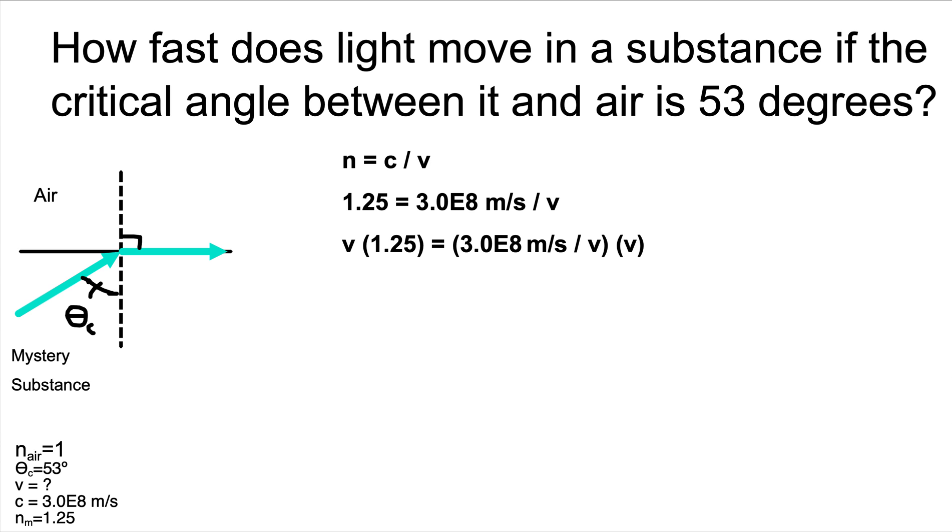We want to solve for velocity, and it is on the bottom of the equation, so we will have to multiply both sides by velocity. When we do that, it will cancel out on the right-hand side. Then we will be left with velocity times 1.25 equals 3 times 10 to the eighth meters per second. Remember, on our calculator, it will look like 3.0E8, so that's how I've written it here.